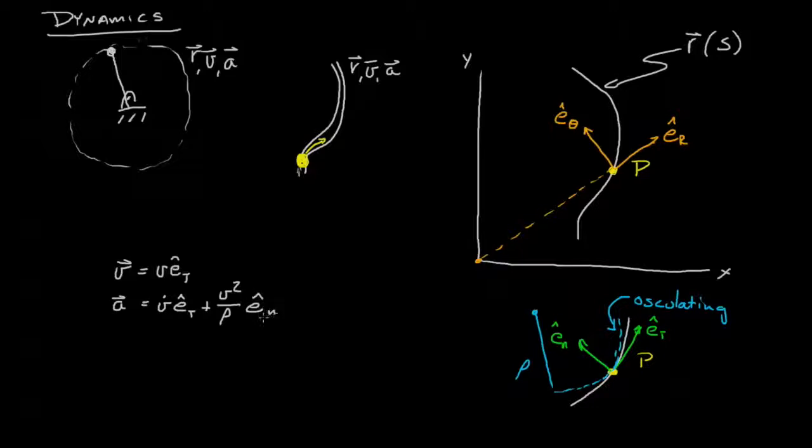So by looking at the path and using a coordinate frame that moves with a point of interest, with some tangential component and some normal component, we can find what the velocity and the acceleration of this is. Now this should look pretty close to what you've seen before, say in polar coordinate frames.